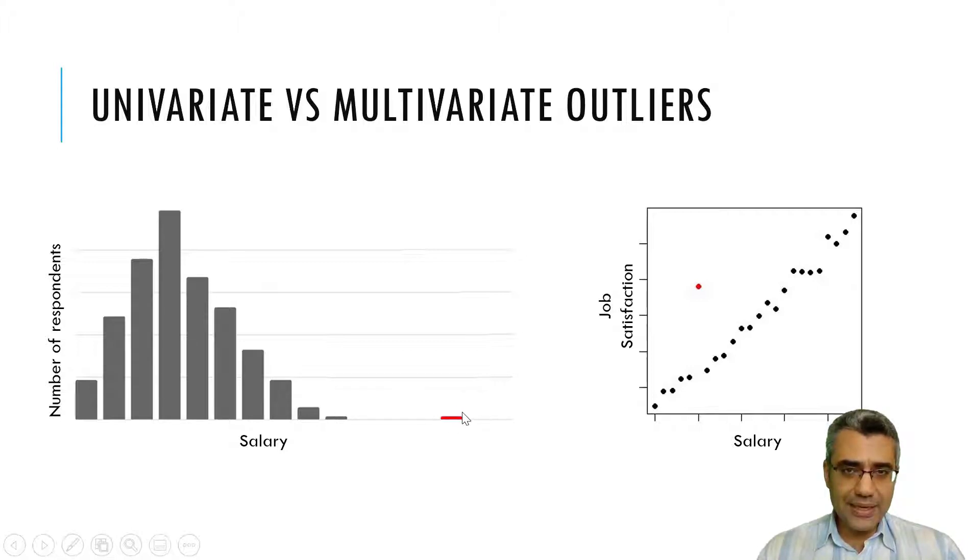But suddenly we have one case that gets maybe $20,000 per month. So this is different from the other cases from the lens of salary. So this is a univariate outlier because we just look at salary.